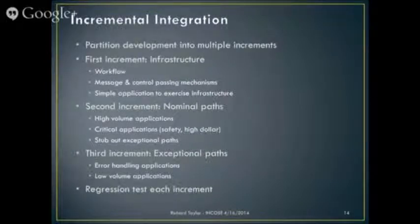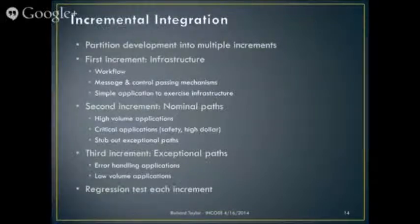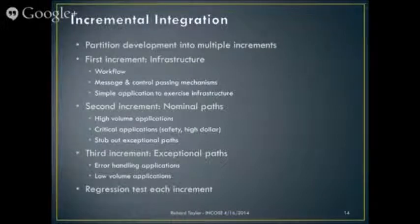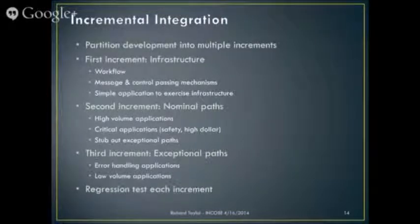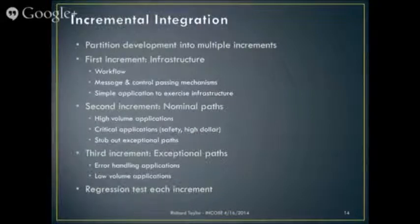I suggest three different increments. In general, the first increment should be the bones — the basic structure that controls the process flow. Low on application, with just enough to prove it works, but the main focus is the workflow working, the communication vehicles between components, whether the security piece works — the basic structure with some trivial little application. Generally, that's not an increment that you would ever deploy.